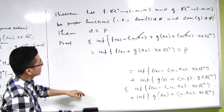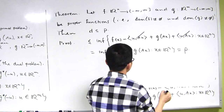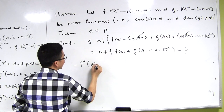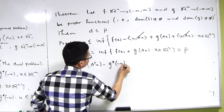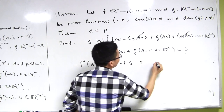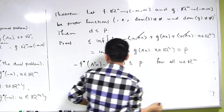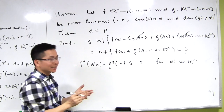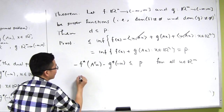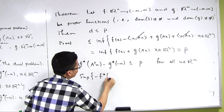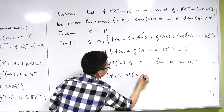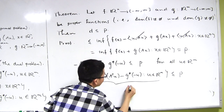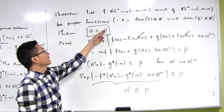So we have the upper estimate: minus f* of A transpose u minus g* of minus u is always less than or equal to p, for all u in R^m. Taking the supremum of the left-hand side with respect to u in R^m gives exactly the optimal value of the dual problem, d. Therefore d is less than or equal to p, and we have completed the proof that the optimal value of the dual problem is always less than or equal to the optimal value of the primal problem.